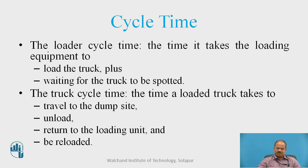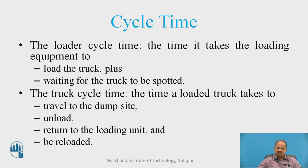The actual production rate, also called the efficiency factor, is taken as 45 by 60 or 0.75 hour of the maximum production rate. The loader cycle time and the hauler cycle time are the two times normally considered in the cycle time of a complete operation. The loader cycle time is the time it takes the loading equipment to load the truck plus waiting for the truck to be spotted. The truck cycle time, however, is immediately after the loading cycle — the time the loaded truck takes to travel to the dump site, unload the material, return to the loading unit, and be reloaded.